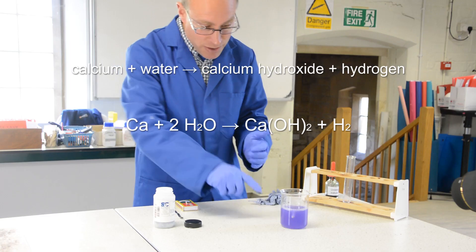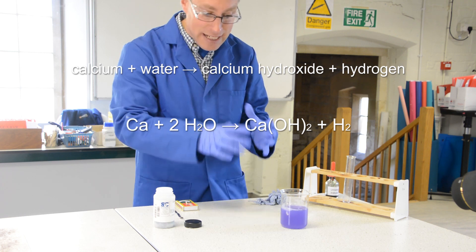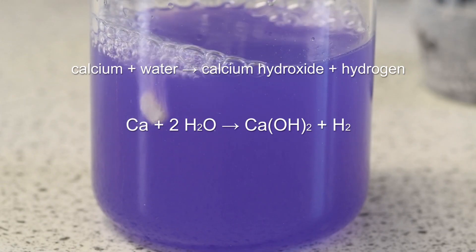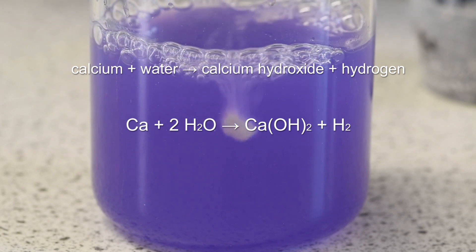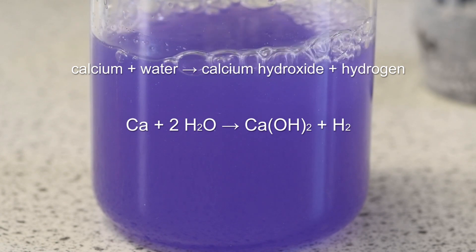Some of that calcium is also starting to float, so it's moving up and down. That's because the calcium gets covered with hydrogen gas and that gas is less dense in the water, so it starts to float up in the beaker.